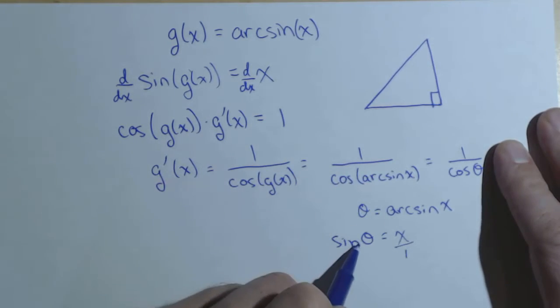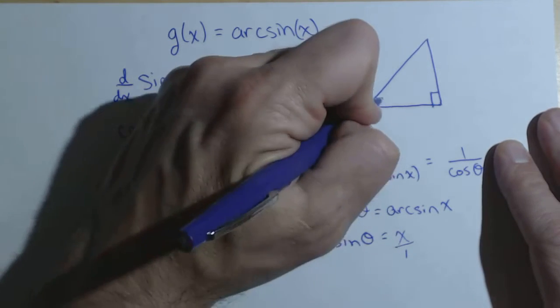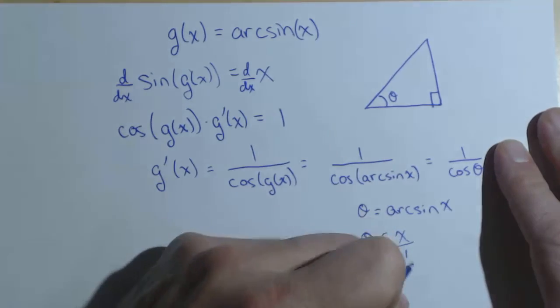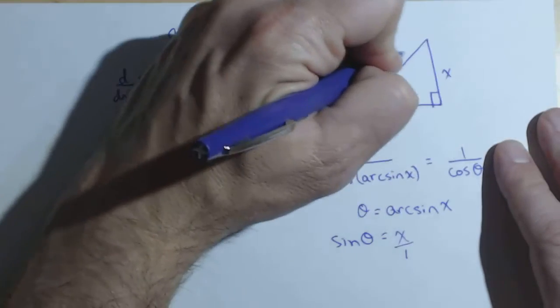And I can think of this as x over one. Sine of theta relates the opposite side over the hypotenuse, so x over one. Let me put theta in here.